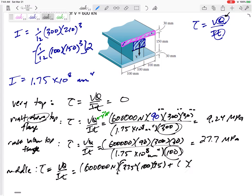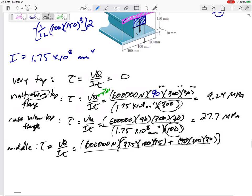I kind of already did that. The area would be 300 by 30 and the y bar prime would be 90 to get to the centroid of that A prime. So just add those y bar prime A primes up and that would be the Q at the middle. The I 1.75 times 10 to the 8, the thickness of the middle 100. So this would be 37.36 MPa, 37.36 MPa.